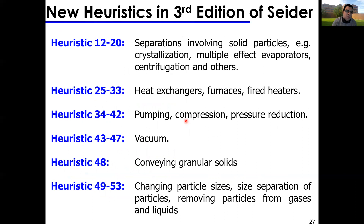There are many other heuristics — 50 or 60 in total — and they keep increasing with experience. As you work as a process engineer, you develop a better feel for them. They cover areas like granular solids, pneumatic conveying, particle sizes, heat exchangers, furnaces, and vacuum systems. A chapter from the textbook covering these will be posted for your reading interest. For the exam, you're only responsible for the heuristics discussed here in detail.